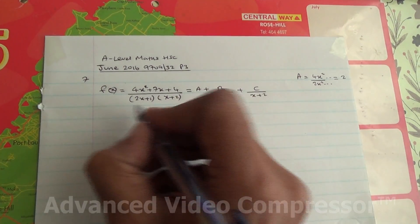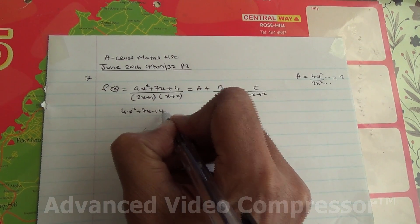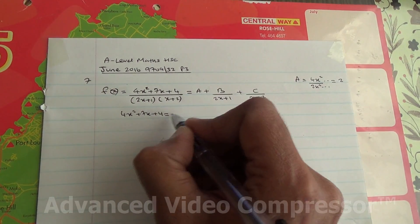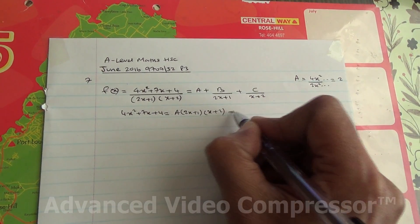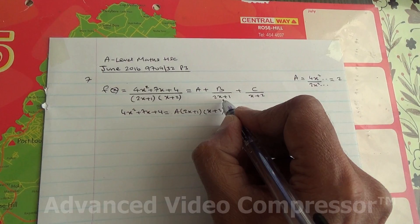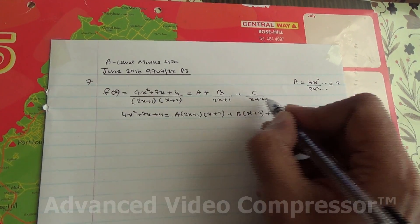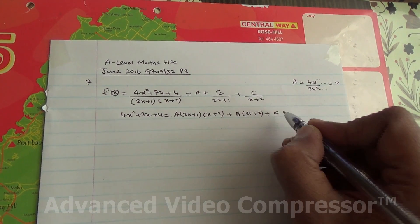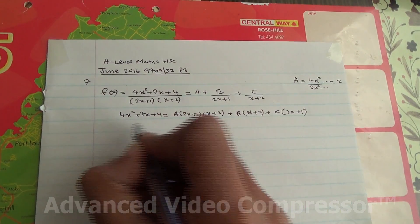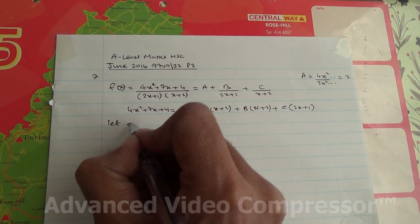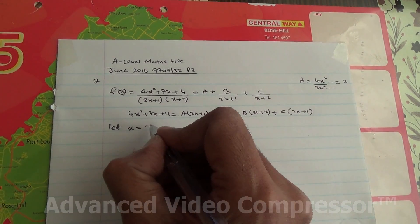So what can we do? We've got 4x squared plus 7x plus 4 equals A times the whole expression, so A times (2x plus 1) times (x plus 2) plus B times (x plus 2) plus C times (2x plus 1). So from here, let x equal minus 2.